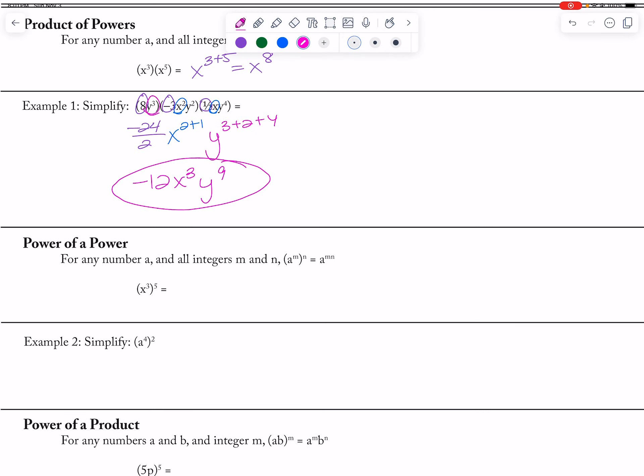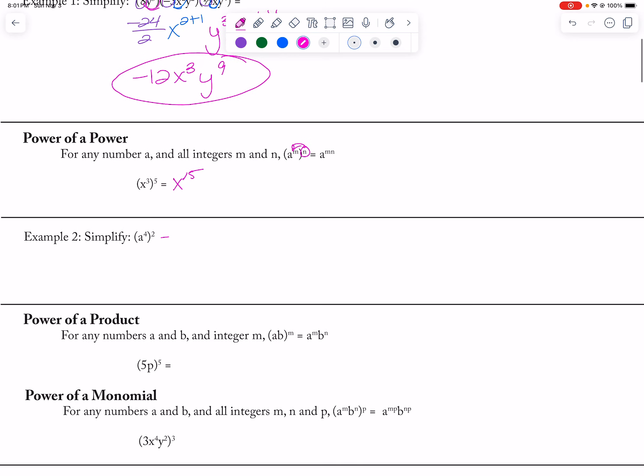Power to a power means that I multiply those powers together, so this is x to the 15th power, which makes this guy a to the 8th power.